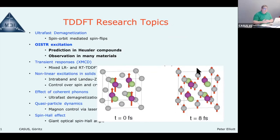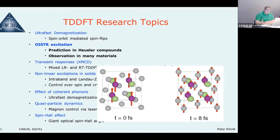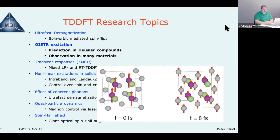That was how we started in this field. We then began looking at more complex systems — in particular Heusler compounds — where we saw a phenomenon we call OSTT. We named it as a shorthand; it stands for optical inter-site spin transfer. Some people call it optically induced spin transfer. The idea is: you start with a material that has spins localized to certain atoms, you hit it with a laser, and you see the spin move to other atoms — but it's not quite as simple as it looks.